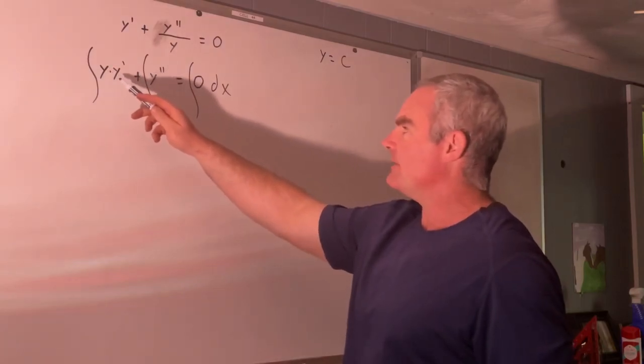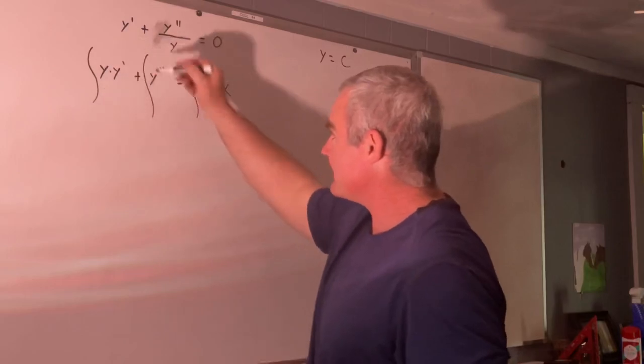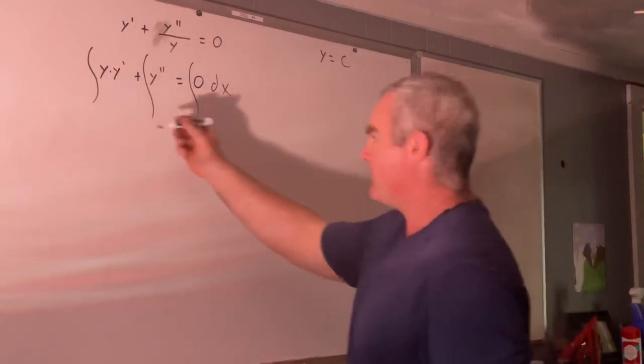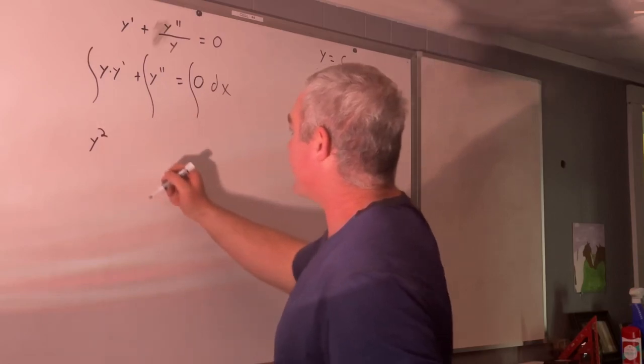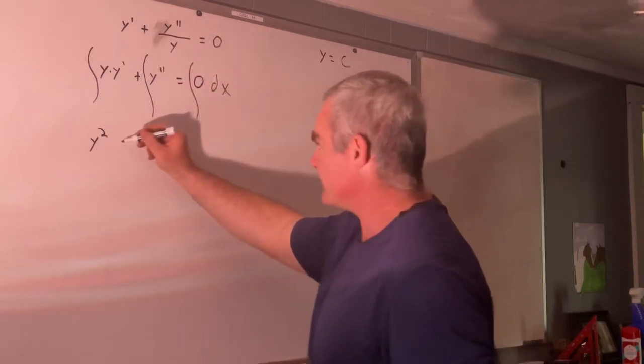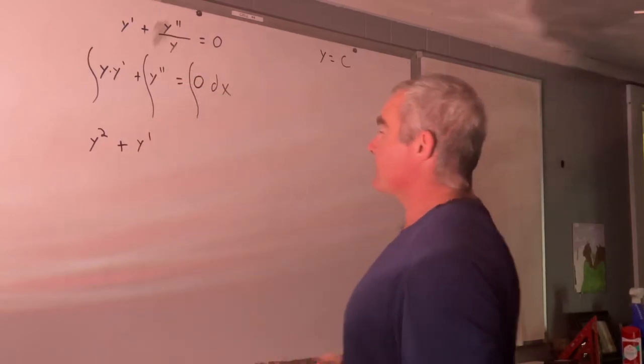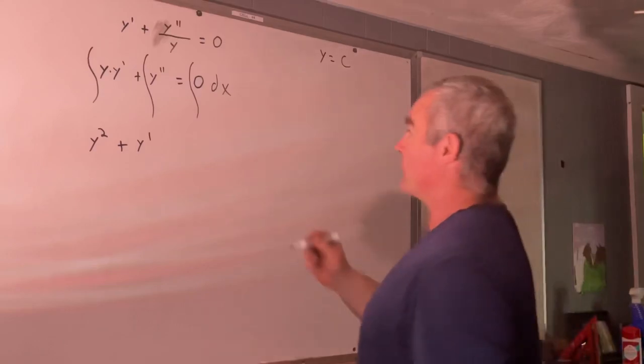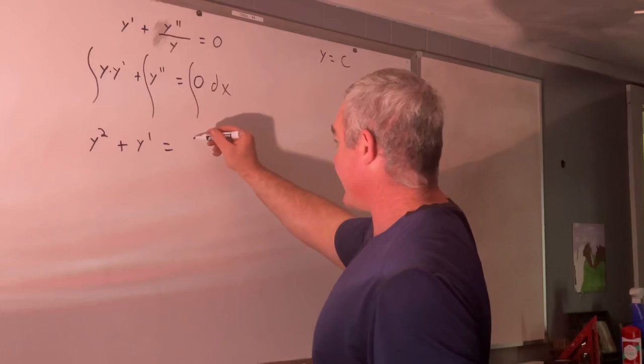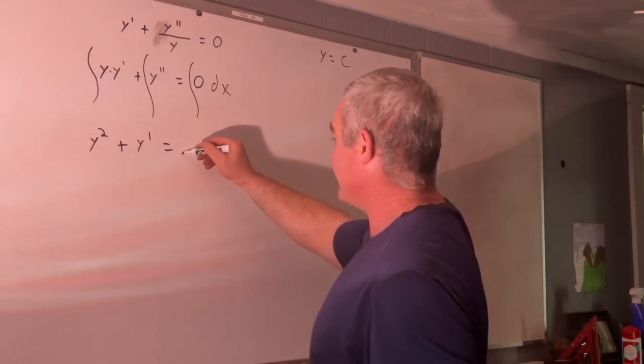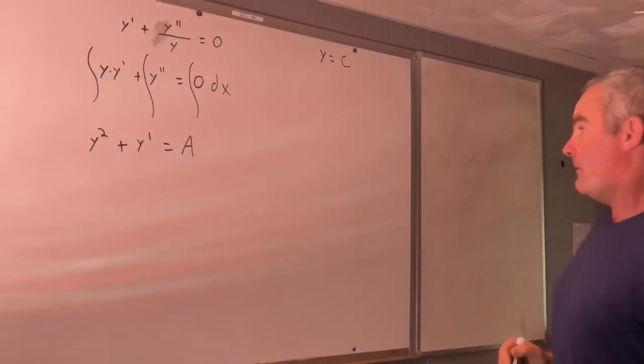This is just u du. You can see if our y is u, then du is y prime. So this part, this integral of y times y prime just becomes y squared. And the integral of a derivative is just the original. In this case, our original is y prime. So this is y squared plus y prime is equal to 0 plus c. So now we get our constant of integration. And I'm going to call that constant of integration a.